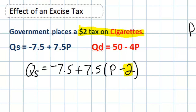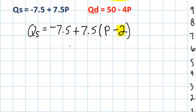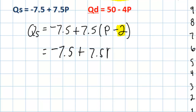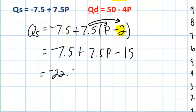Now that we have a new supply equation we can simplify it and find out mathematically what our new equilibrium price and quantity will be. QS = -7.5 + 7.5P - 15. Multiplying 7.5 by -2 gives -15, so simplifying further, QS = -22.5 + 7.5P.